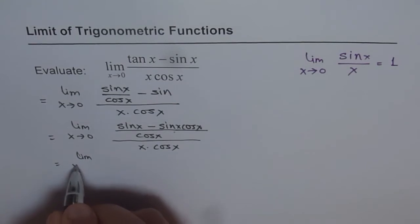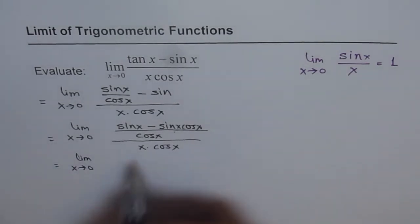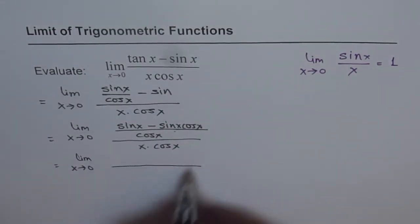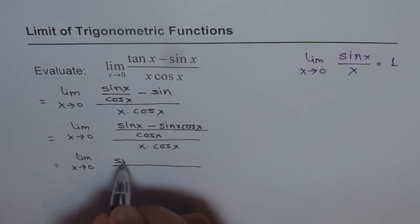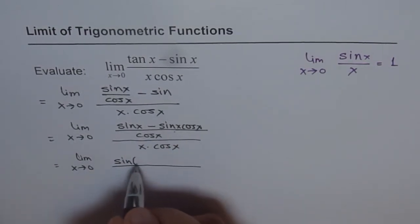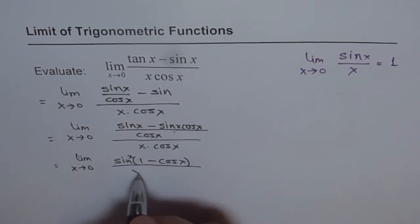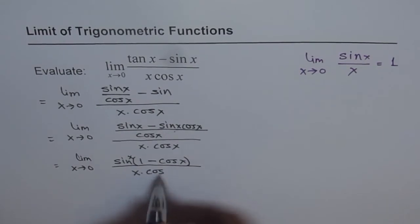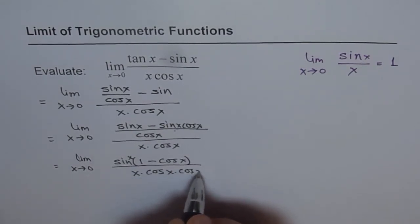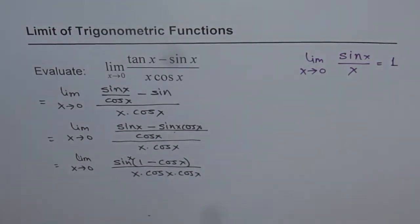Now further, what we will do is, we'll write this in the denominator itself. We can write this as sine x. Let's take sine x common. Sine x, 1 minus cos x, over x times cos square x, or let me write cos x times cos x.